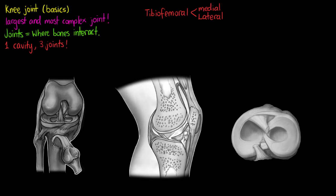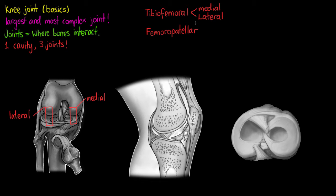So we have the distal femur connecting to the tibia on both the medial and lateral sides — those are the first two articulations involved in the knee joint. Our last joint is located between the patella and the distal end of the femur, and is known as our femoropatellar joint.